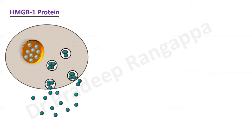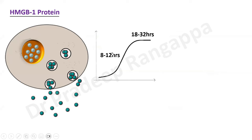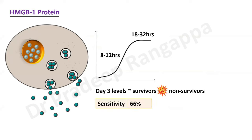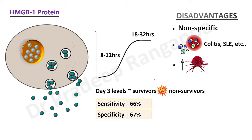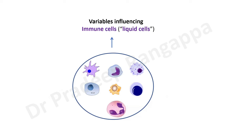HMGB1 — high mobility group box 1 protein — is released from lysosomes and the nucleus of cells following injury. It peaks in 8 to 12 hours and plateaus in 18 to 32 hours. Day-three levels of HMGB1 can help prognosticate between survivors and non-survivors. However, sensitivity is only 66% and specificity is also low. Like other biomarkers, it is non-specific and can rise in inflammatory conditions like colitis, SLE, rheumatoid arthritis, and in cancer patients.